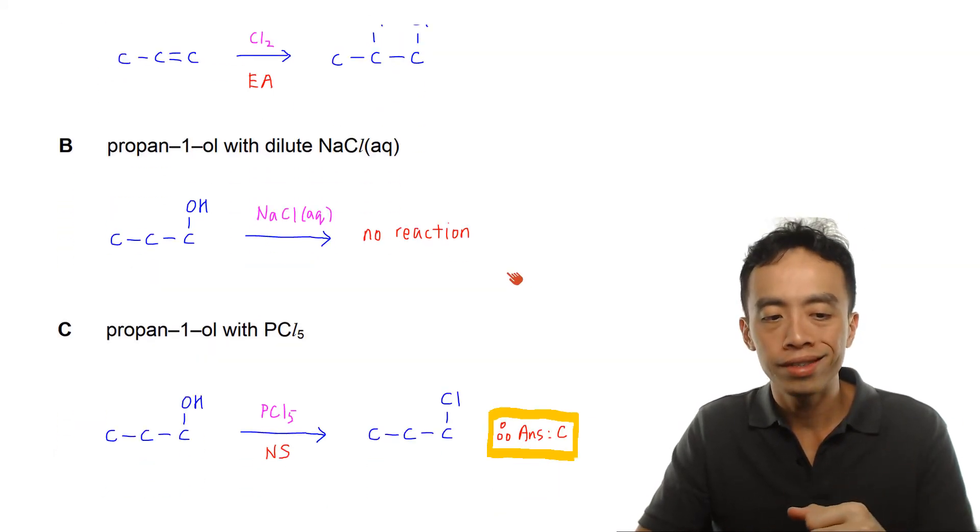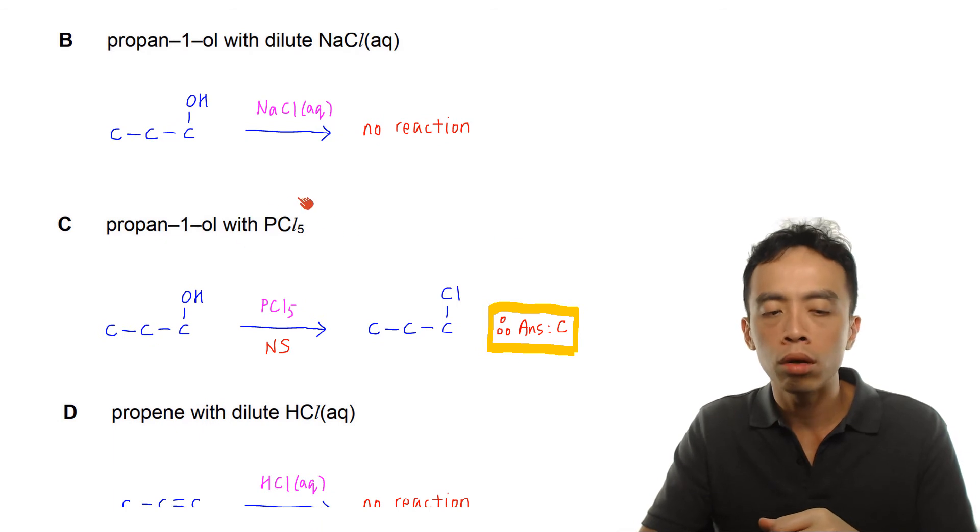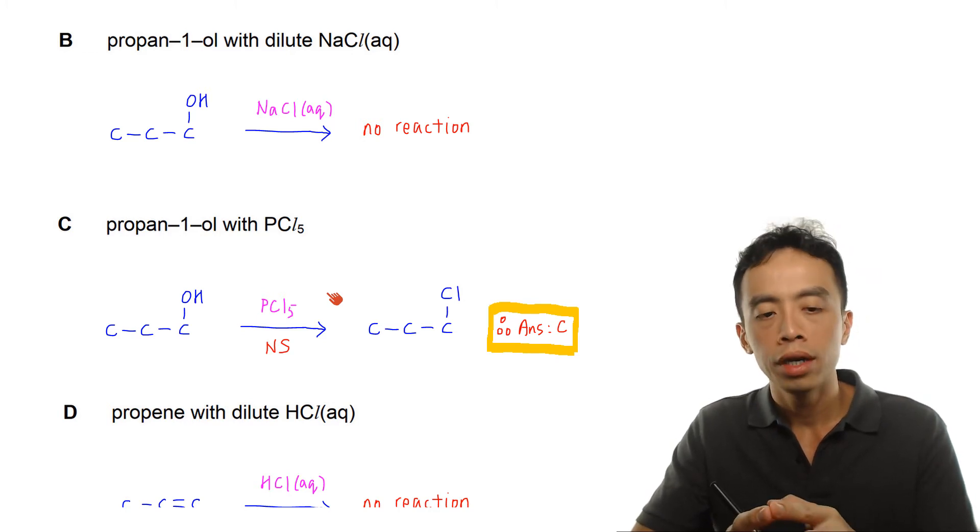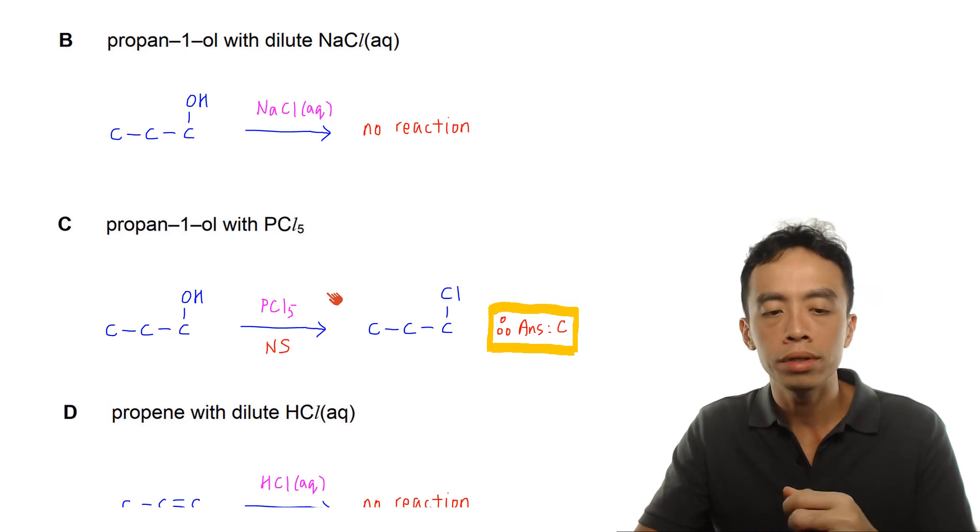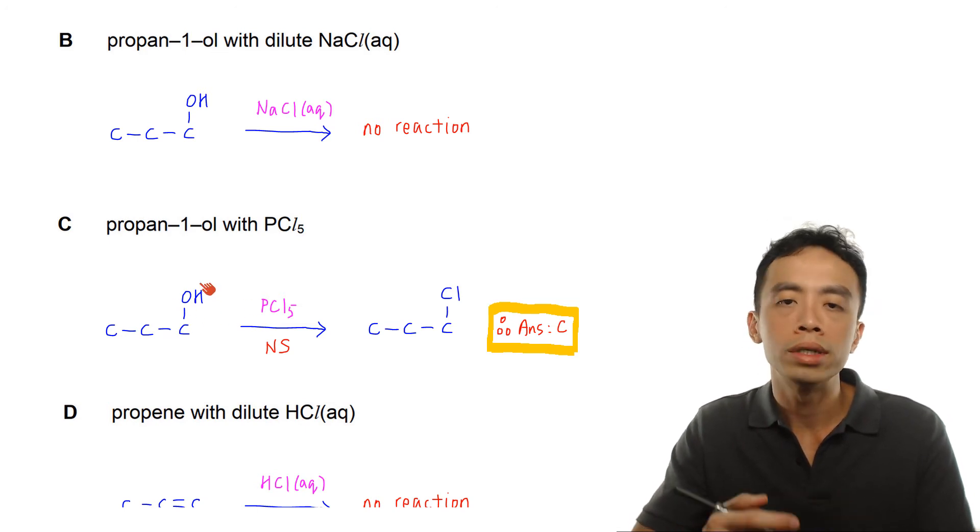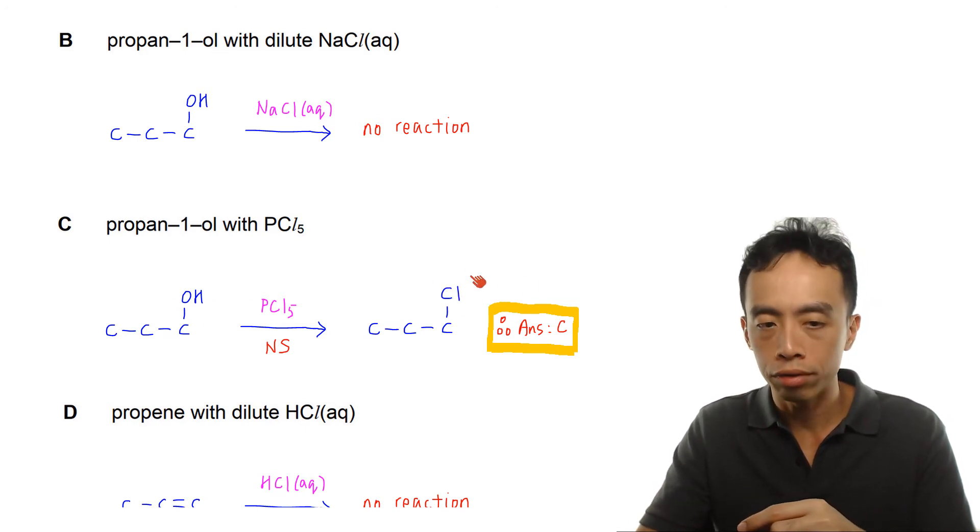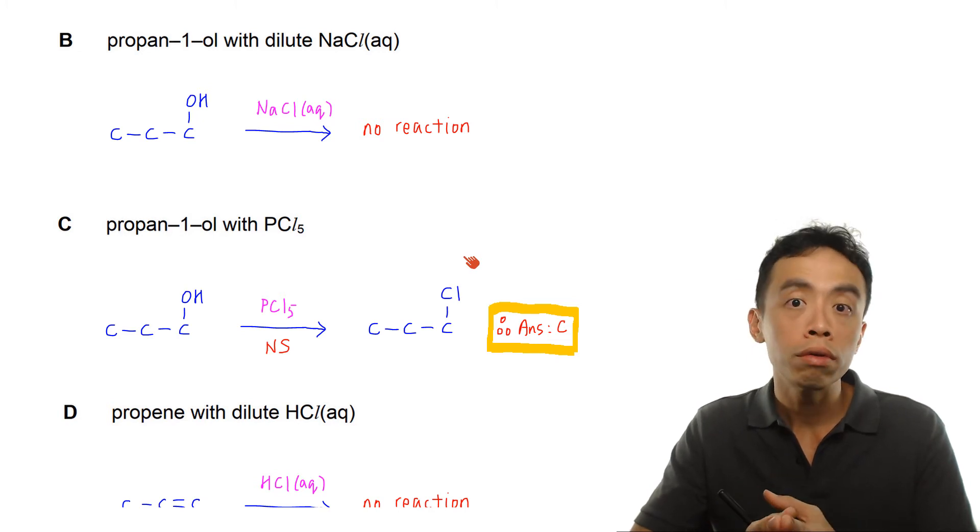Now for option C, propan-1-ol with PCl5. If I have alcohol here, and if I react this with PCl5 anhydrous at room temperature, then a nucleophilic substitution reaction will take place. What happens is the OH group will be substituted with my Cl group. So this is a nucleophilic substitution involving PCl5.